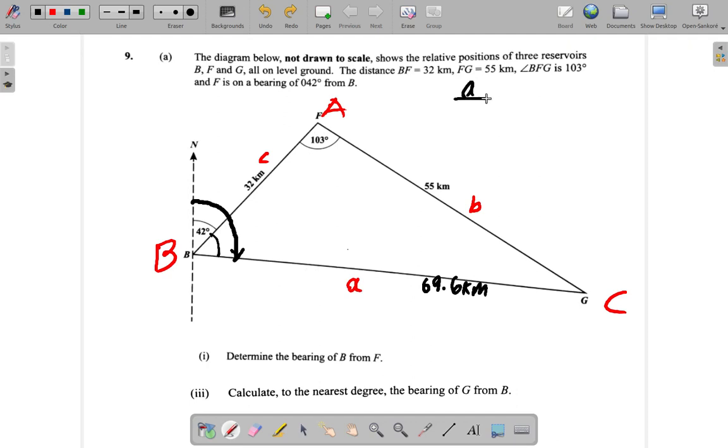The formula sheet says a over sine A equals b over sine B equals c over sine C, where the lowercase a, b, and c are the sides and the capital A, B, and C are the angles opposite to them.